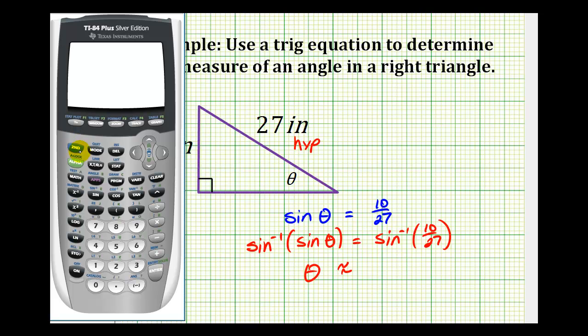Now we'll press second, sine, that gives us inverse sine, and then ten divided by twenty-seven. So theta is approximately twenty-one point seven degrees.